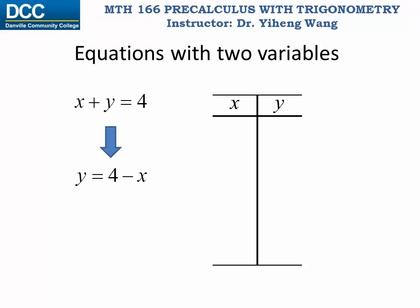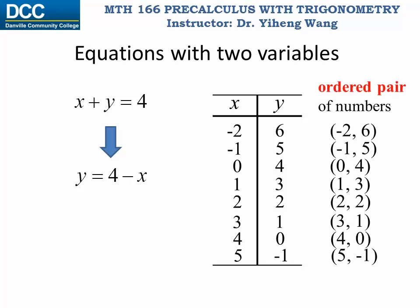I want to choose x values to be, say, from negative 2 to positive 5. And from this new equation I can easily calculate the corresponding y values as such, since y is 4 minus x. And now I've got these ordered pairs of numbers that look very much like the coordinates of points that we learned very recently.